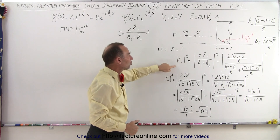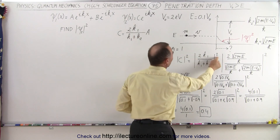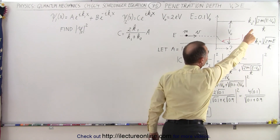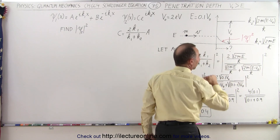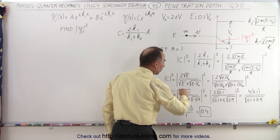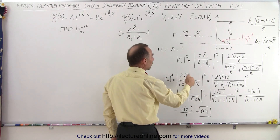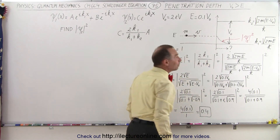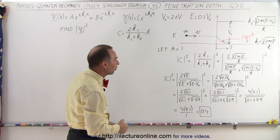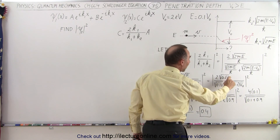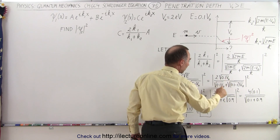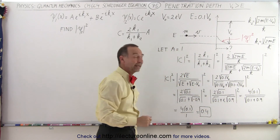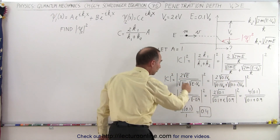We take the magnitude of C and square it — the magnitude of this equation, squared — assuming A equals 1. We replace what k₁ and k₂ are equal to in terms of those expressions, and right away the h-bars cancel out and the 2m's cancel out everywhere, giving us a simplified equation. If we replace the energy of the particle, and in this example let the potential step be 2 electron volts and the particle energy be 10% of that — 0.2 electron volts — we replace each E by 0.1 times V₀, and subtracting gives us 0.1 minus 1 times V₀. The V₀ cancels out everywhere, giving us our simplified equation.